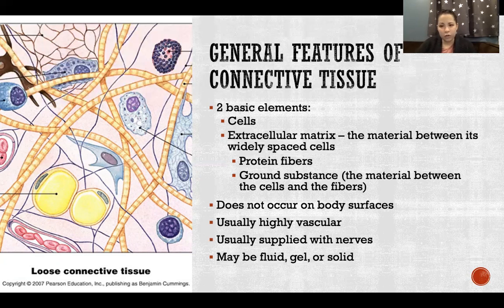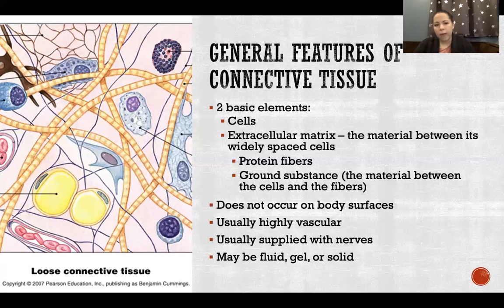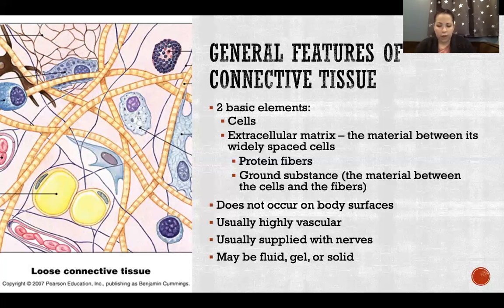Importantly, connective tissue does not occur on the body surface — it's always epithelial tissue at the surface. Connective tissue is always deep to that, connecting epithelial tissue to some other structure or tissue. Connective tissue is usually highly vascular, meaning we usually have a lot of blood supply to connective tissue.